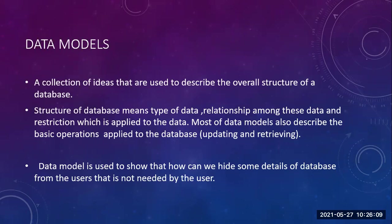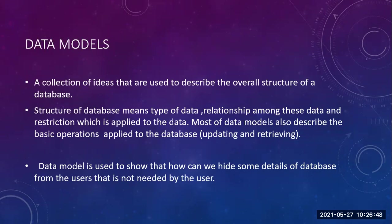The structure of the database means the type of data — as I told you, roll number, name, marks one, marks two, grade, percentage — and what type of data you are going to include: numbers, alphabets, or alphanumeric. That kind of data you are supposed to specify. Then the relationship among this data — from the first semester to the sixth semester, your university register number will never change, so that relationship from first semester to fourth semester needs to be created.